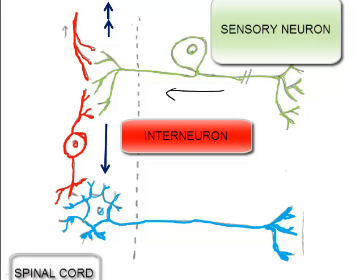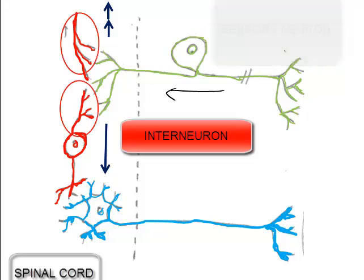They have short dendrites and short or long axons. In this image, we see an interneuron and a part of another interneuron, and what this shows us is that more than one interneuron can interact with a sensory neuron.